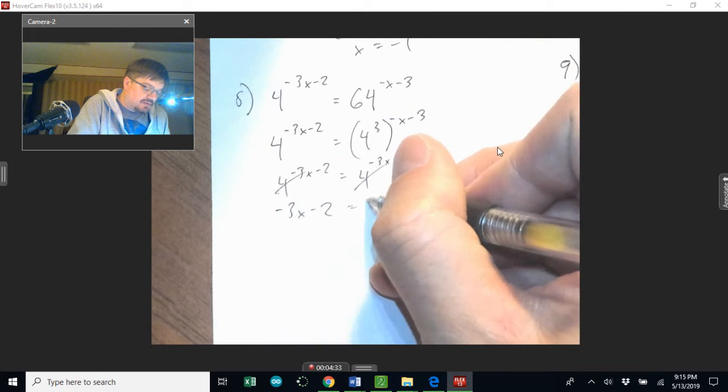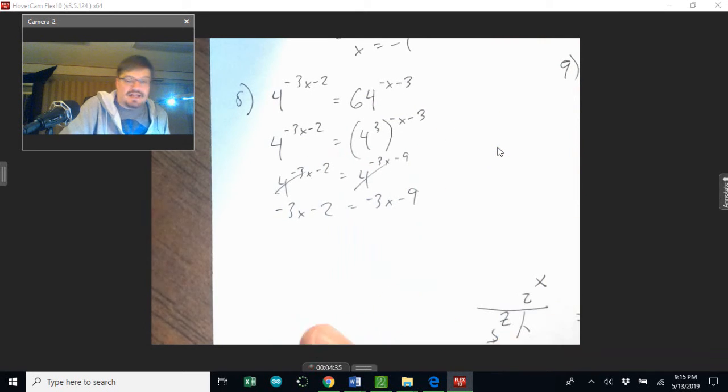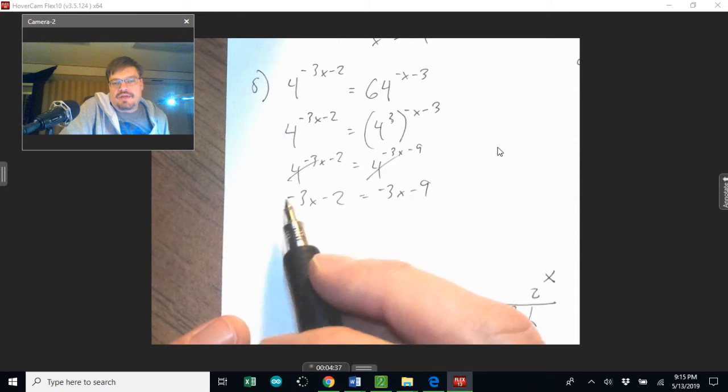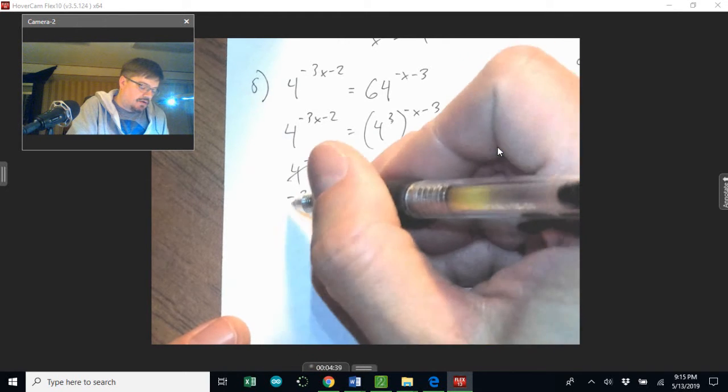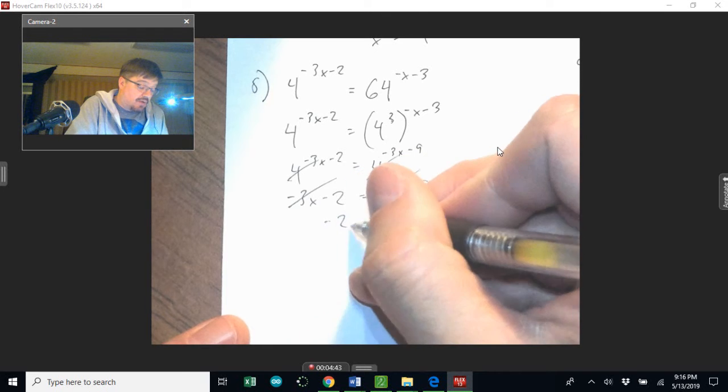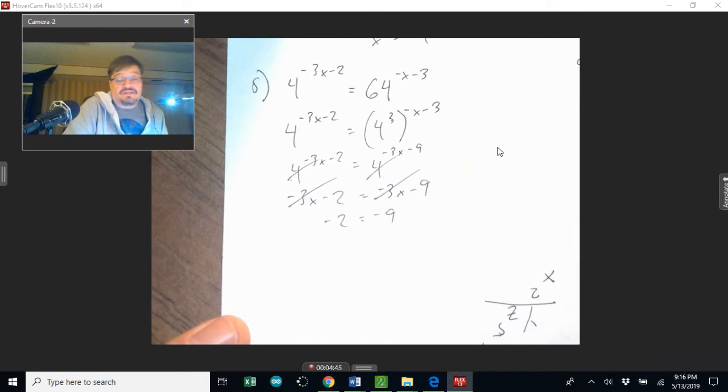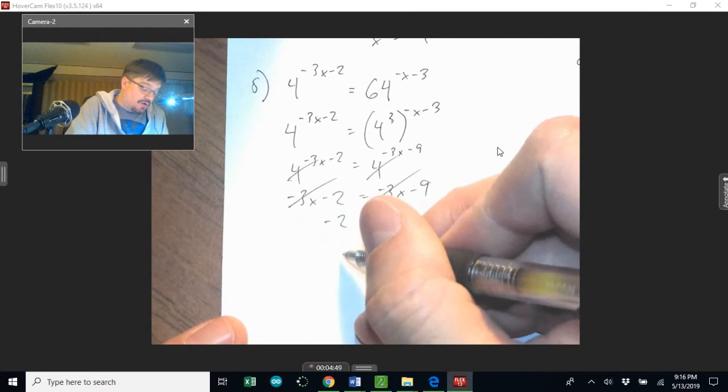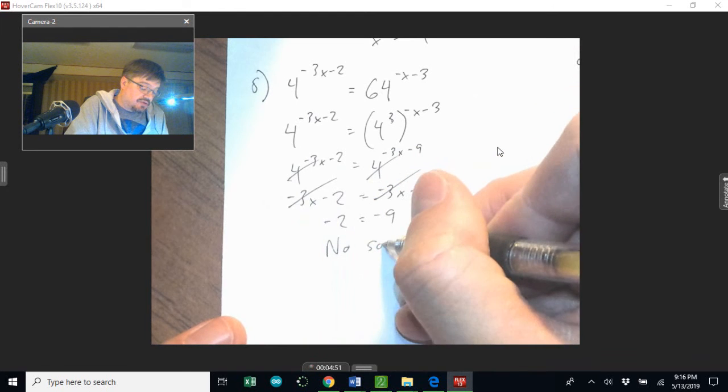Notice how you have negative 3x on both sides here. If I were to add a positive to both sides, they're going to cancel out. What I'm left with is negative 2 equals negative 9, and that's false. That's not true. So therefore there is no solution to this guy.